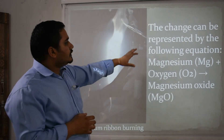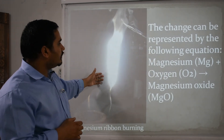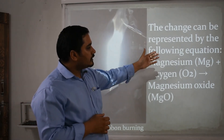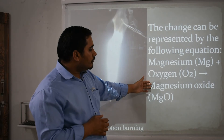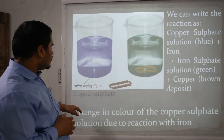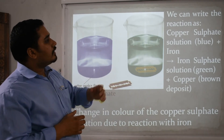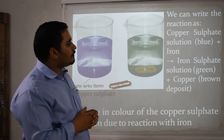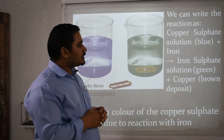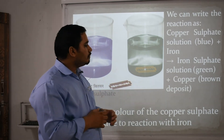The changes can also be represented by the following equations. Here is magnesium ribbon burning: Magnesium (Mg) combined with Oxygen gives Magnesium Oxide. Here is another example — copper sulphate. We can write the reaction as: copper sulphate solution (blue) plus iron gives iron sulphate solution (green), and copper (brown) is deposited on the blade.